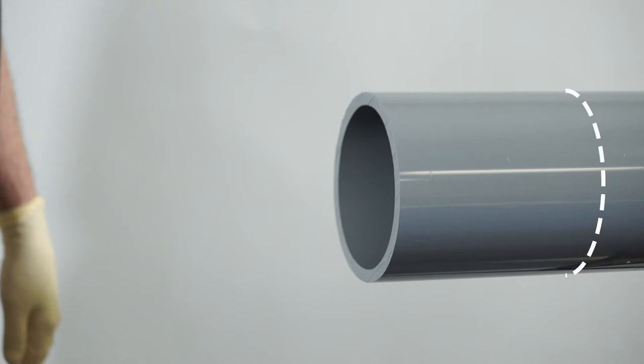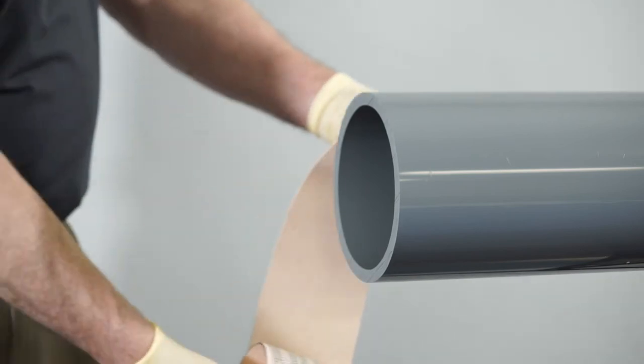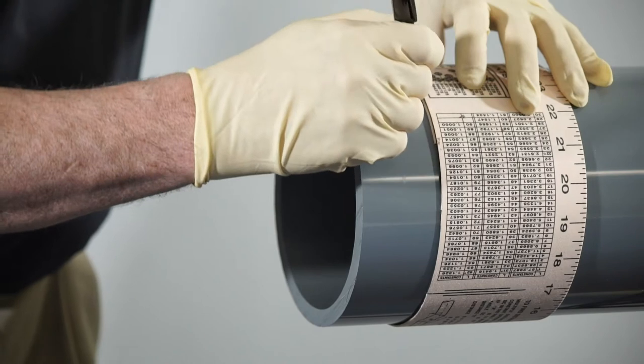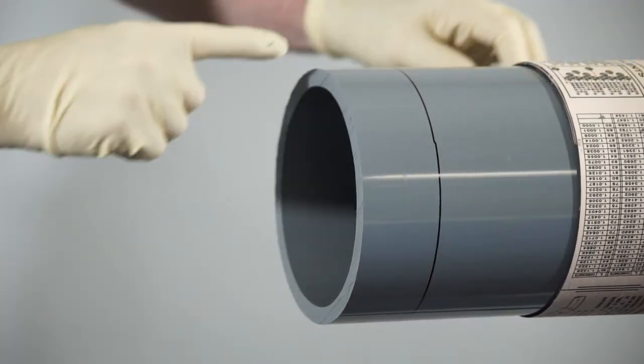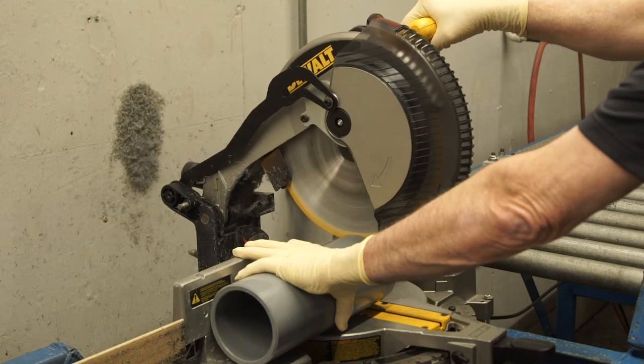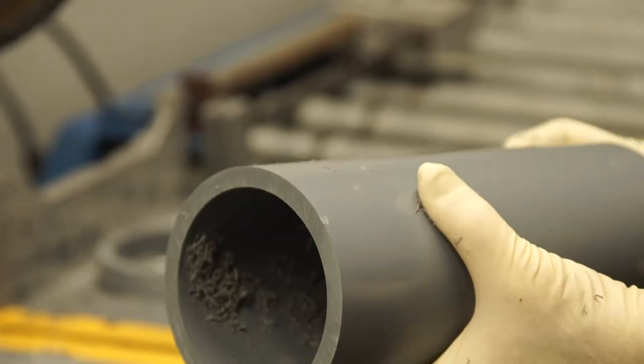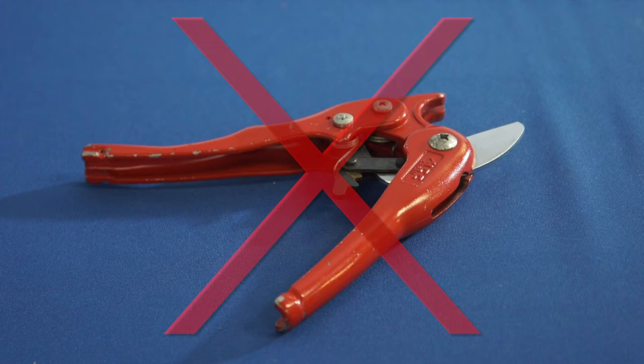The pipe must be cut as square as possible. A diagonal cut reduces the bonding area and thus the strength of the joint. An easy method to ensure a straight cut is to use any flexible straight edge to mark around the pipe diameter at the appropriate length for the cut. The pipe can be cut with a wheel-tight plastic tubing cutter, power saw, chop saw, or fine-toothed saw. George Fischer does not recommend the use of ratchet cutters as they may split the pipe during cutting.